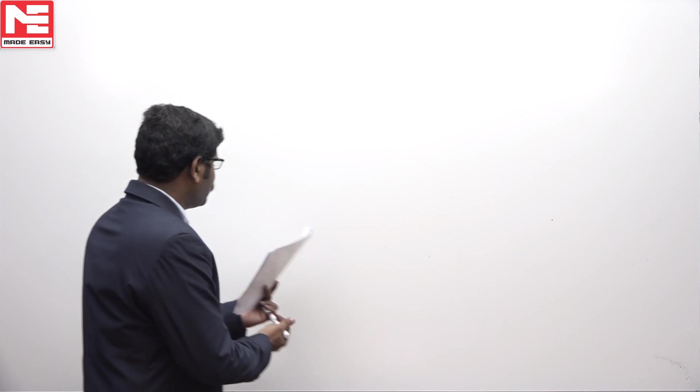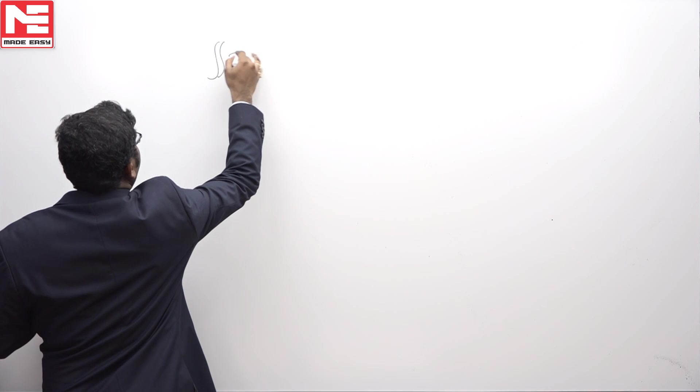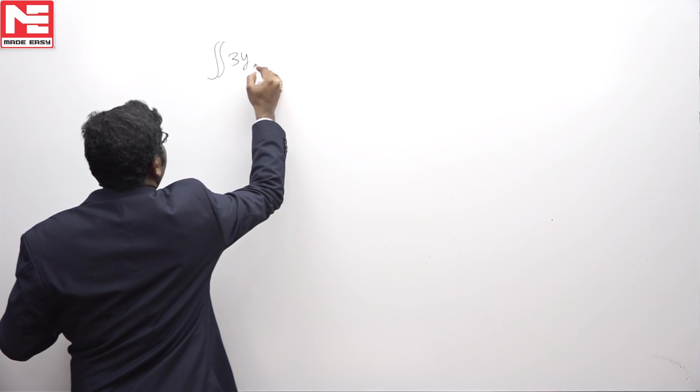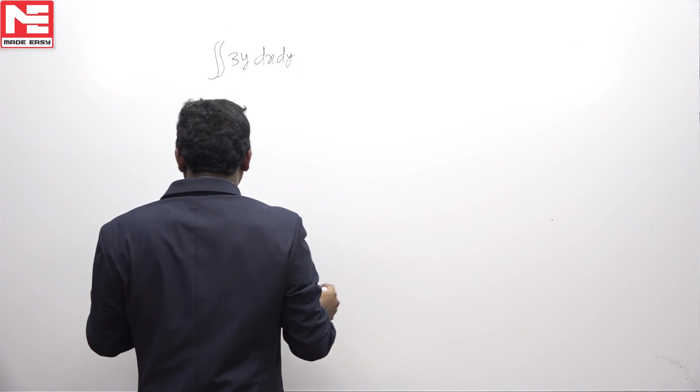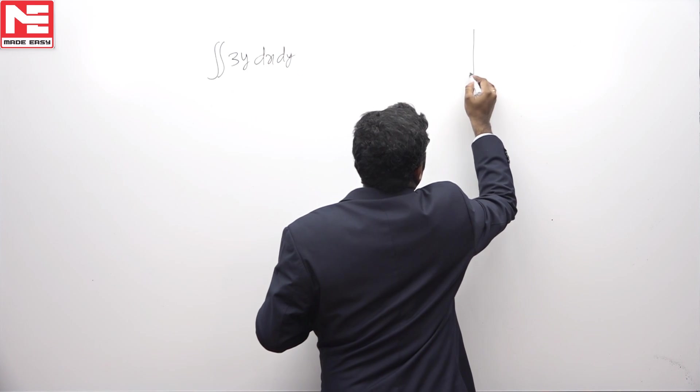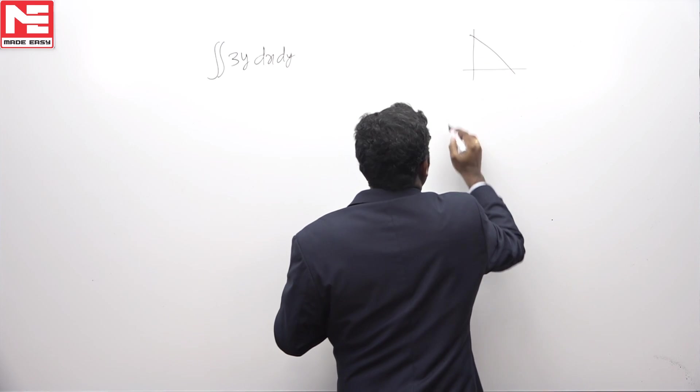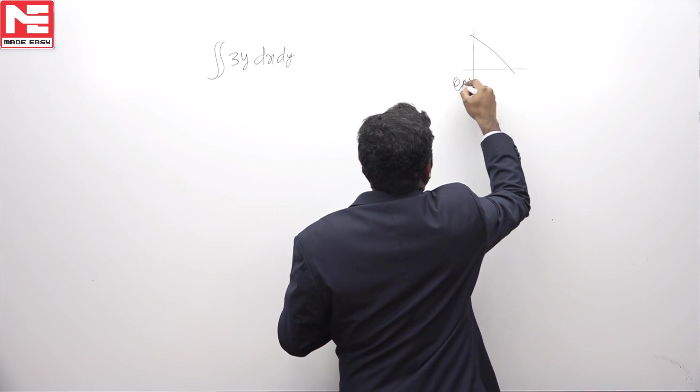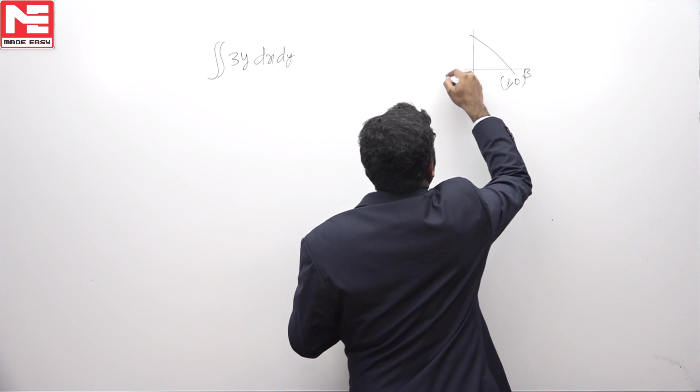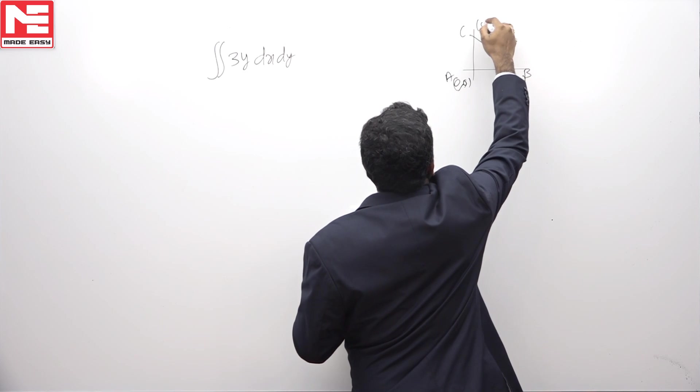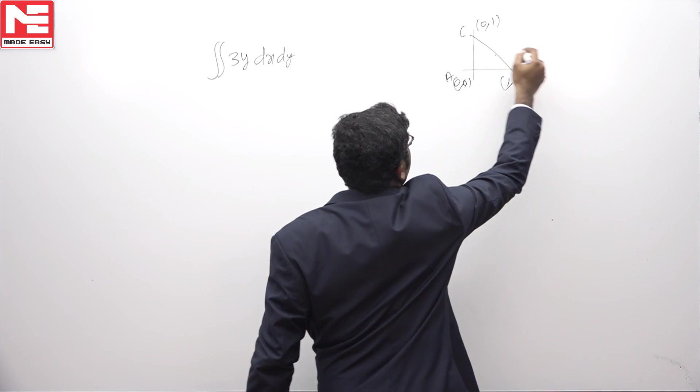In this problem we have to find the area evaluated by the double integral of 3y dx dy over triangle ABC. Triangle ABC is given as A(0,0), B(1,0), C(0,1). Therefore this line is x plus y equal to 1.